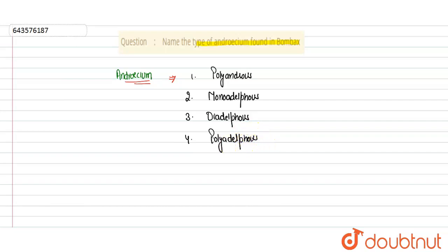So that is polyadelphous. Now in the question, they have asked: name the type of androecium found in Bombax. In Bombax, the polyadelphous type of androecium is found. Polyadelphous means when